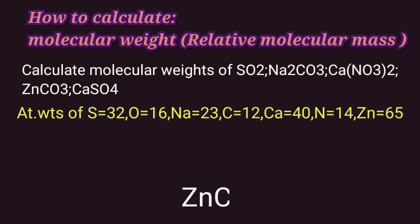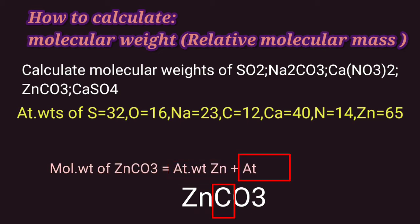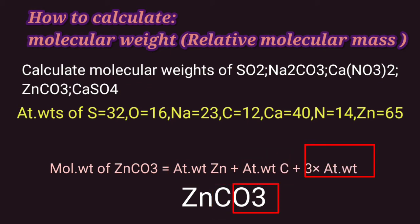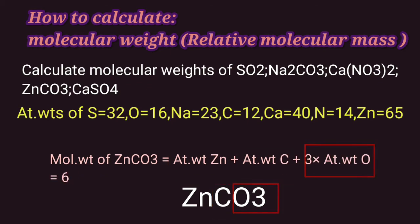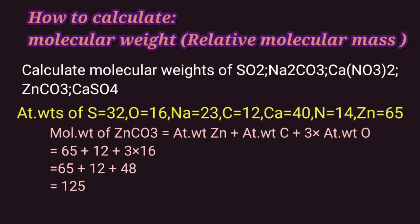Our next compound is zinc carbonate. Molecular weight of zinc carbonate is equal to atomic weight of zinc plus atomic weight of 1 carbon atom plus 3 into atomic weight of oxygen atoms, which is 65 plus 12 plus 3 into 16. That comes to 125.